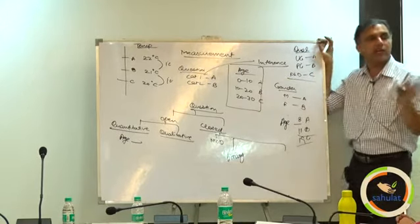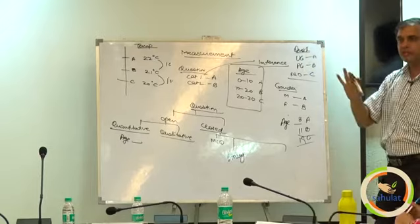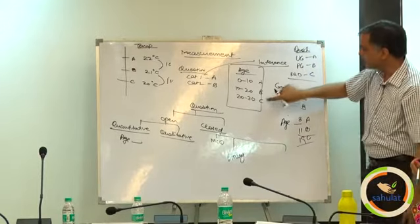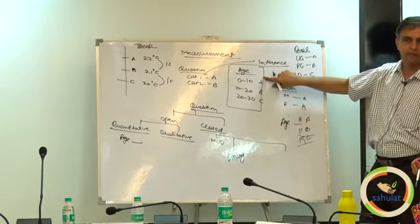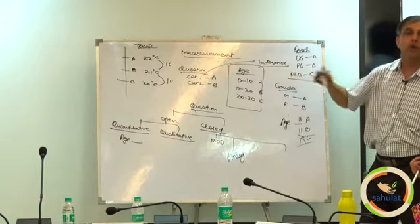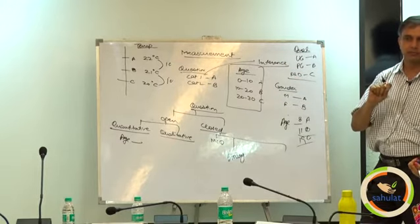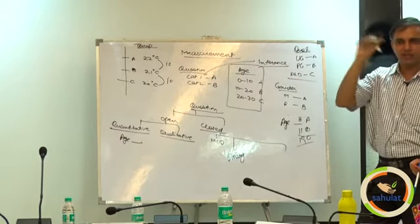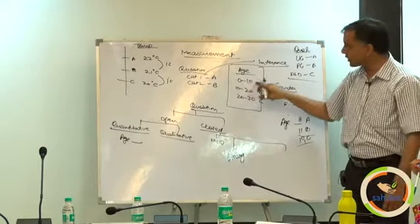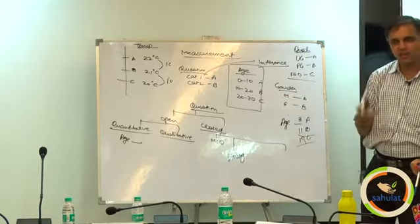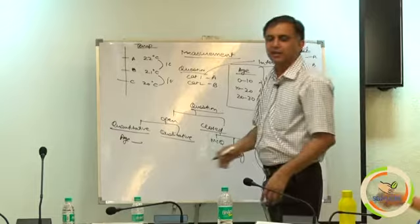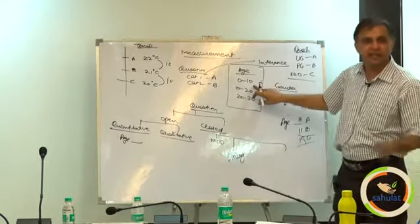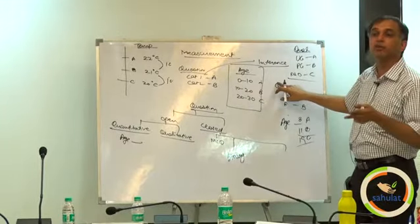No, you cannot guarantee. All we can say is C is elder to A and B. This is ordinal measurement. I know where your mind is ticking. 0 to 10, 10 to 20, this is ordinal, this is interval. What else is interval? This is interval scale. I am asking you interval measurement.